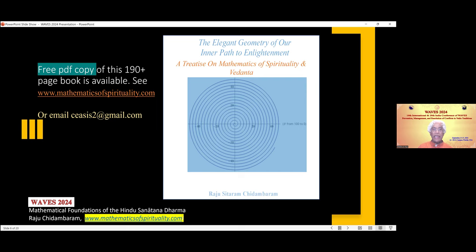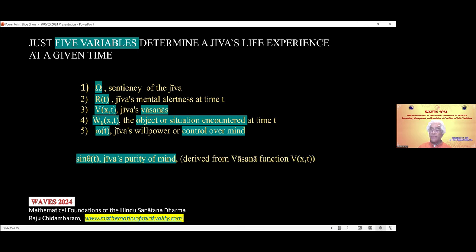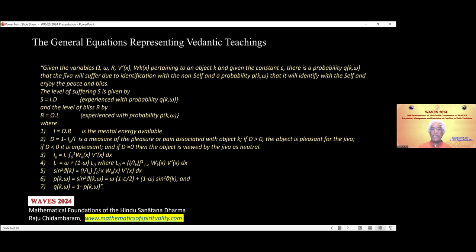Going to the mathematics itself, there are five so-called input variables involved in defining the mathematics of spirituality. They include the sentiency of the jiva, the vasanas of the jiva, the willpower of the jiva over its mind to control its mind, and objects and situations encountered in the world by the jiva. The purity of the jiva plays a central role in discussing spirituality. These are the general equations which represent the Vedantic teachings. Don't panic — I'm not going to discuss the mathematics, but only show their spiritual implications.